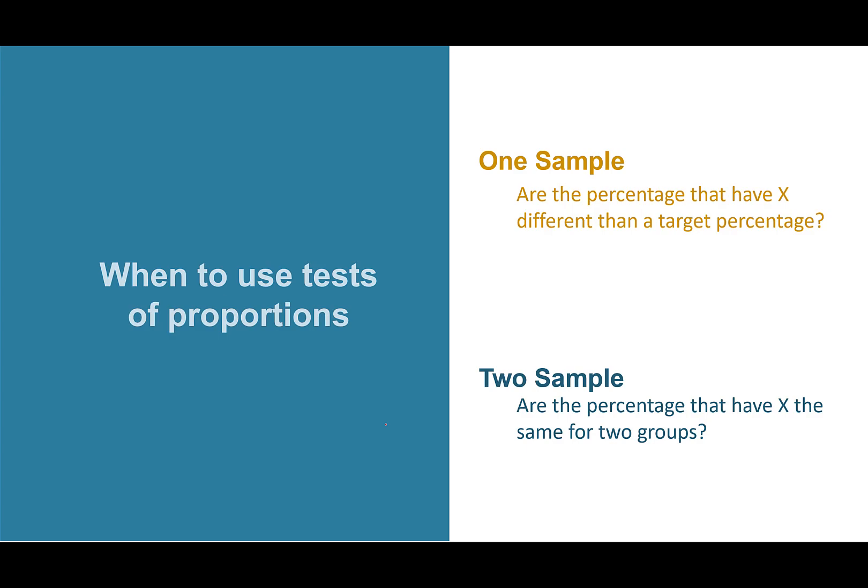And there's also a two-sample one where you're comparing two different groups. Are the percentage that have X, the certain property, the same for the two groups?